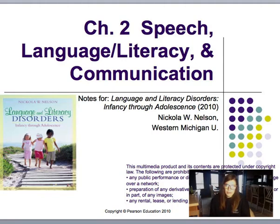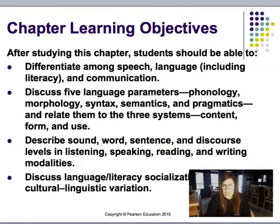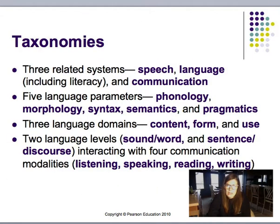On page 54 is the chapter summary and study questions, and I encourage you to look at those. Here are our chapter learning objectives — what you should be able to know after studying this chapter. For the taxonomies, they mention three related systems: speech, language, and communication. There are five language parameters: phonology, morphology, syntax, semantics, and pragmatics.